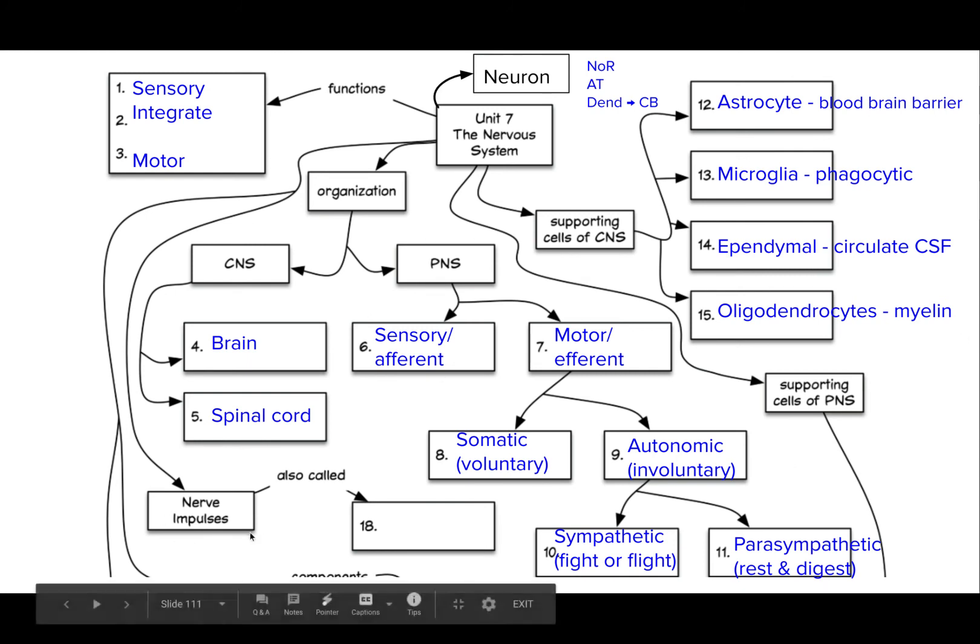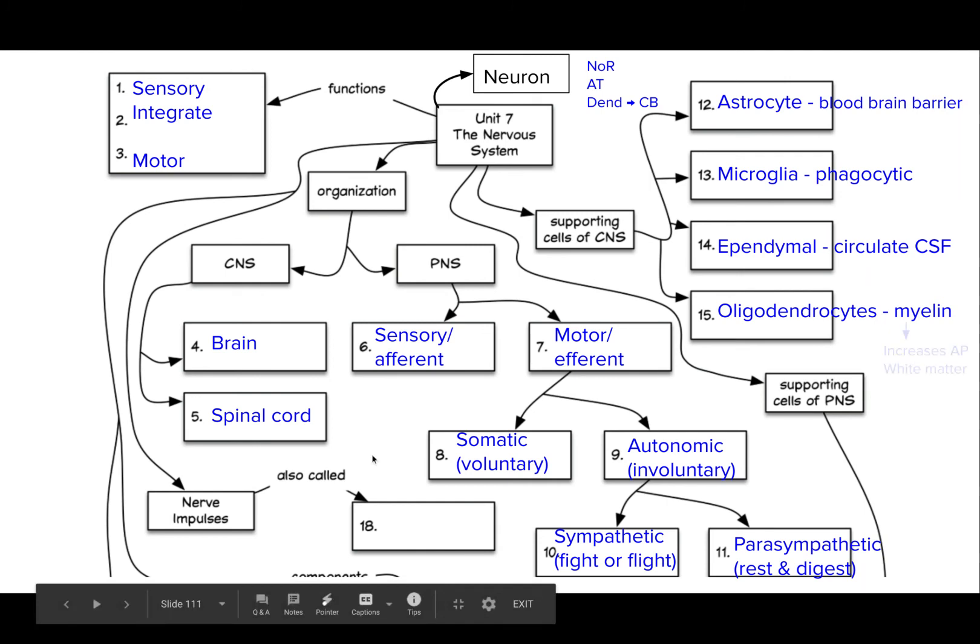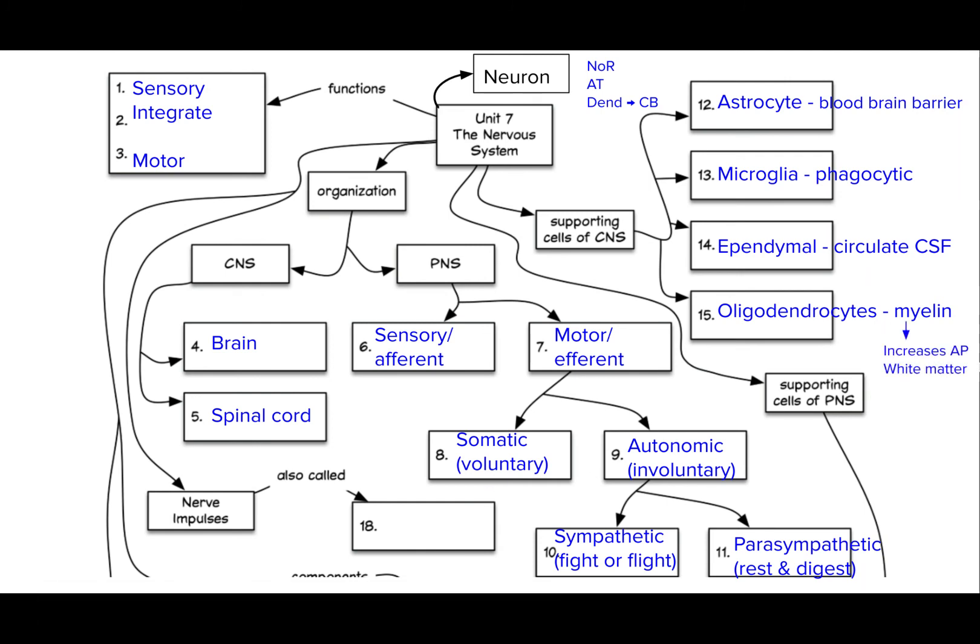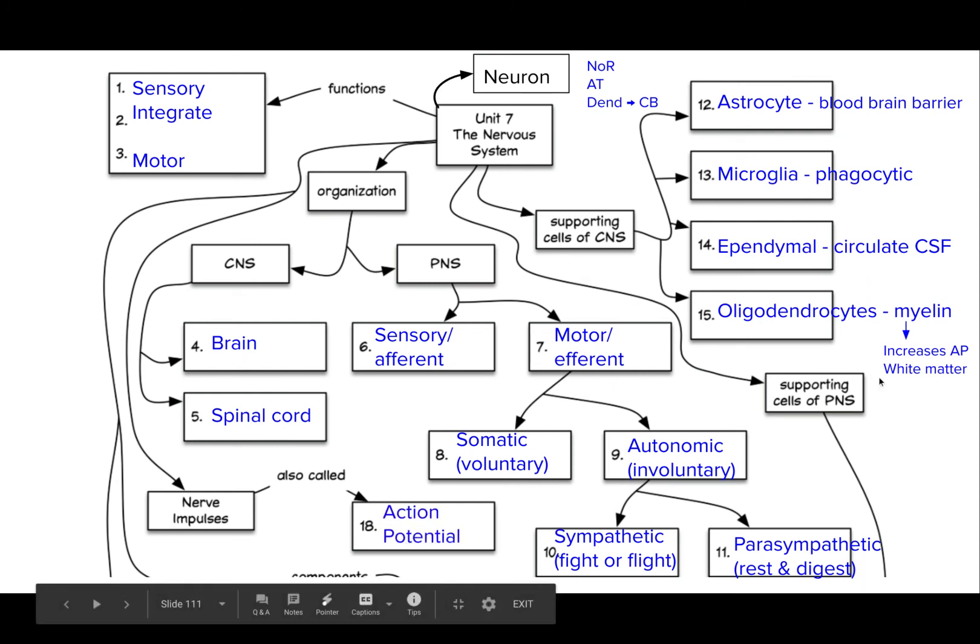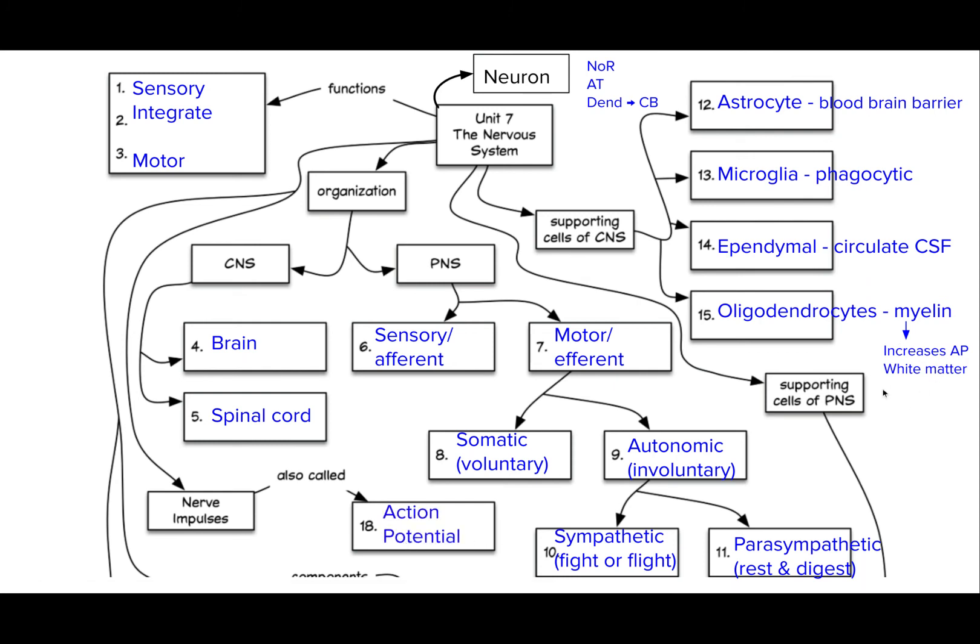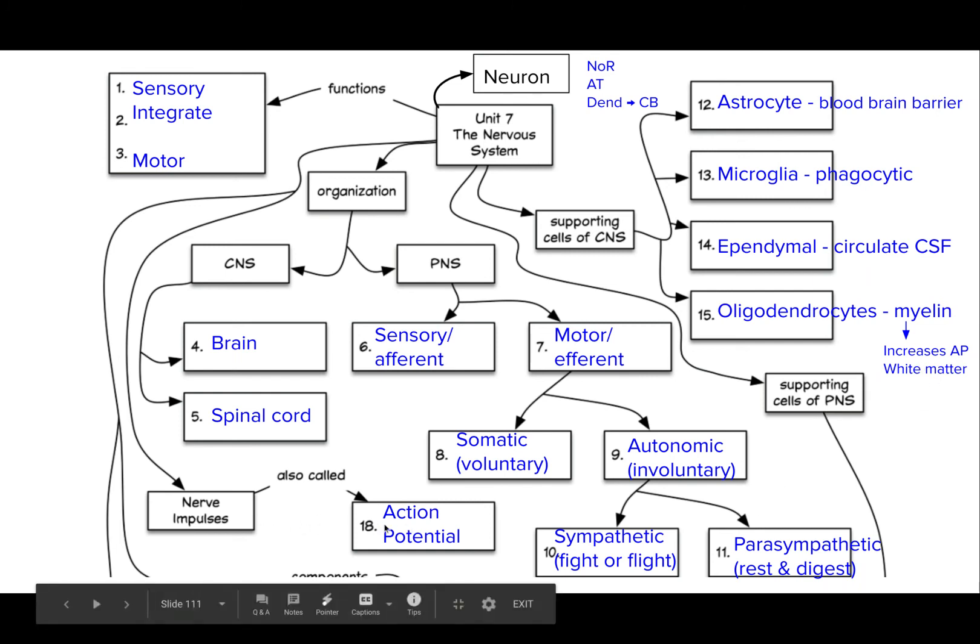Before we get to that though, our nerve impulse, another name for that is called an action potential. I forgot to mention this: The myelin is what increases your action potential, which is what goes in box 18. And when something is myelinated, we observe that as being white matter. So the parts of the spinal cord that have white matter in it have myelinated axons. If it is gray matter, it is unmyelinated. And the benefit of having myelin is that it speeds up those nerve impulses or APs, the action potential.